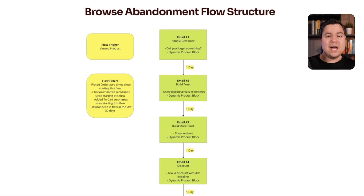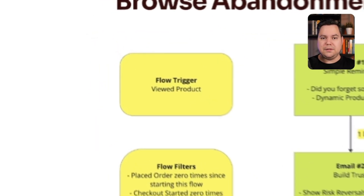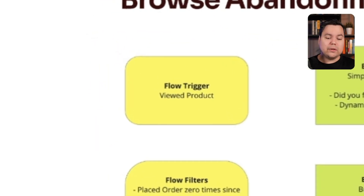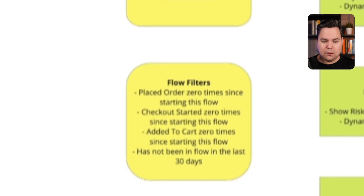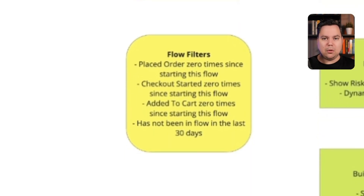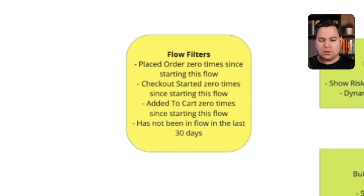So how do you structure your Browse Abandonment Flow? This is the structure we like to use for our clients at our agency. The flow trigger is 'viewed product,' and we have a few flow filters in place. Placed order zero times since starting this flow. Checkout started zero times since starting this flow. Added to cart zero times since starting this flow. And has not been in the flow in the last 30 days.